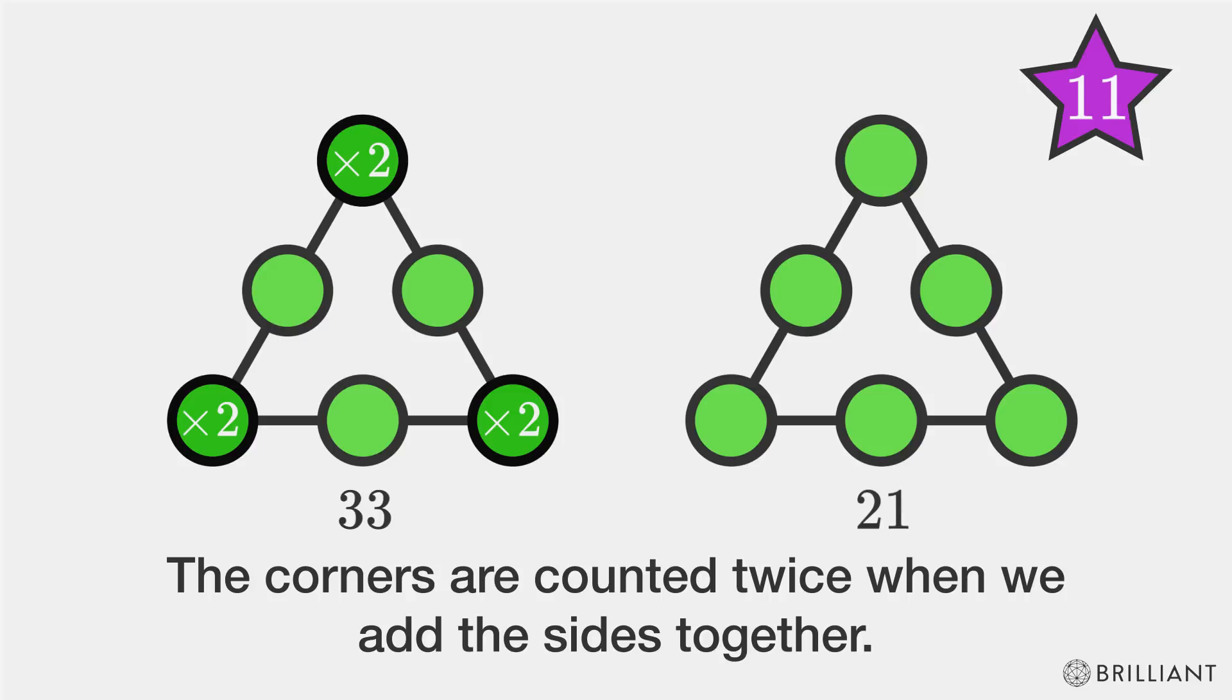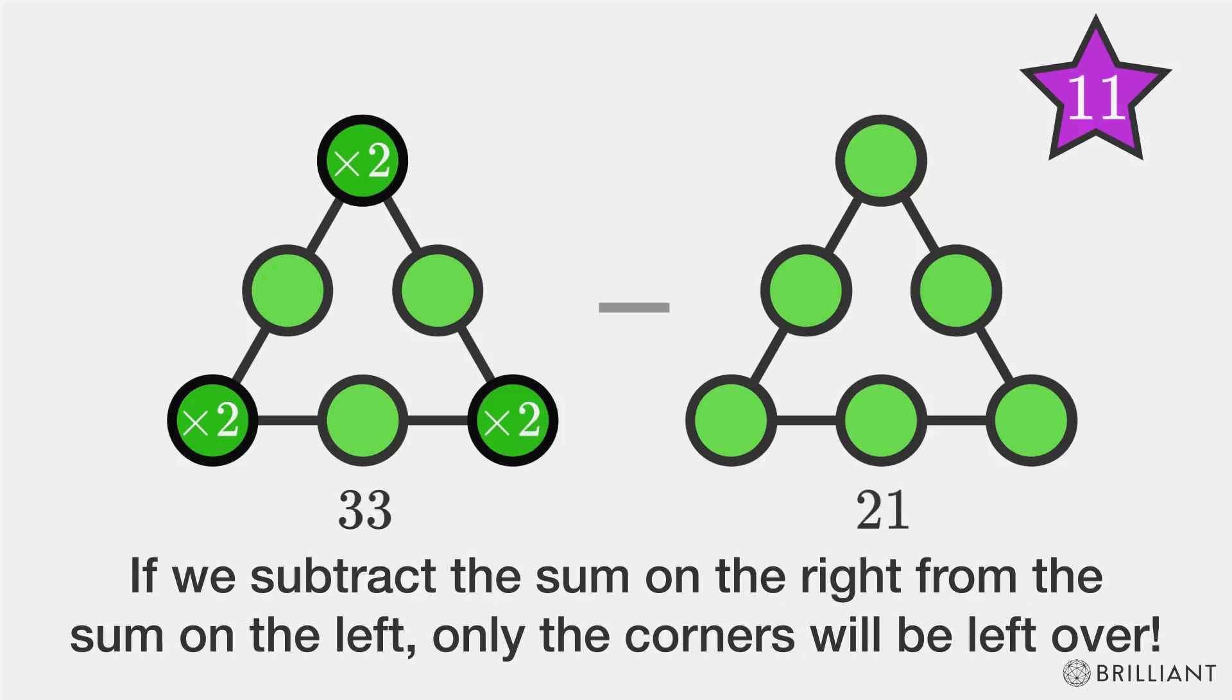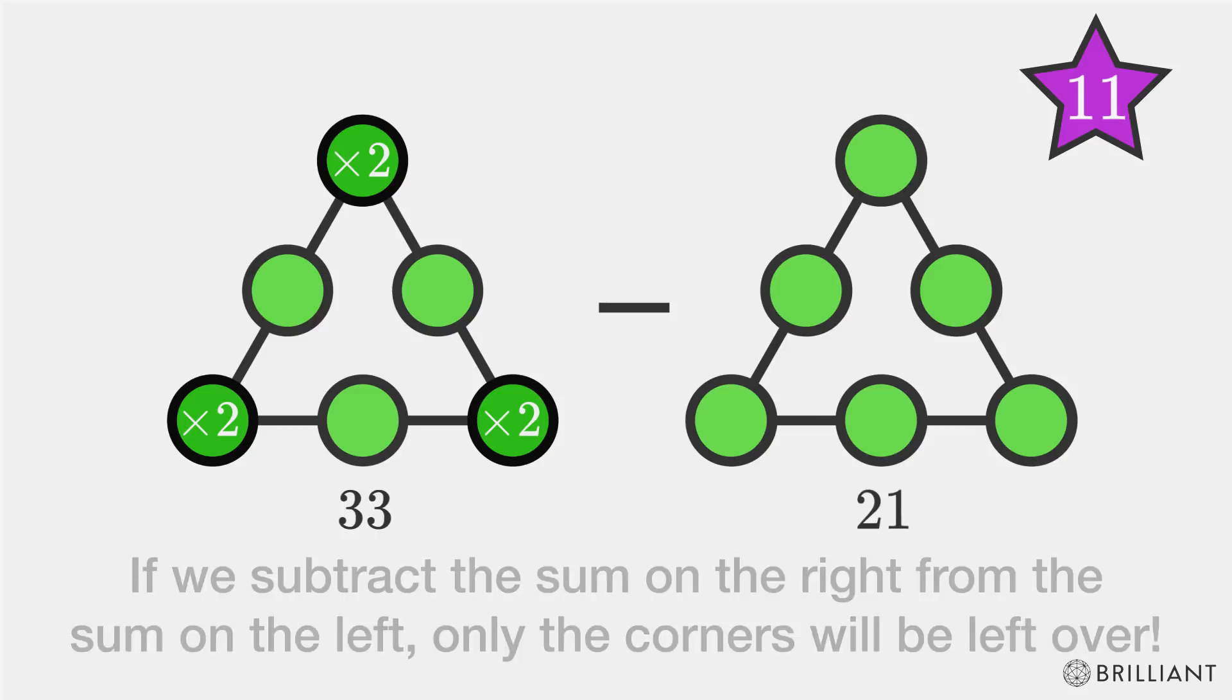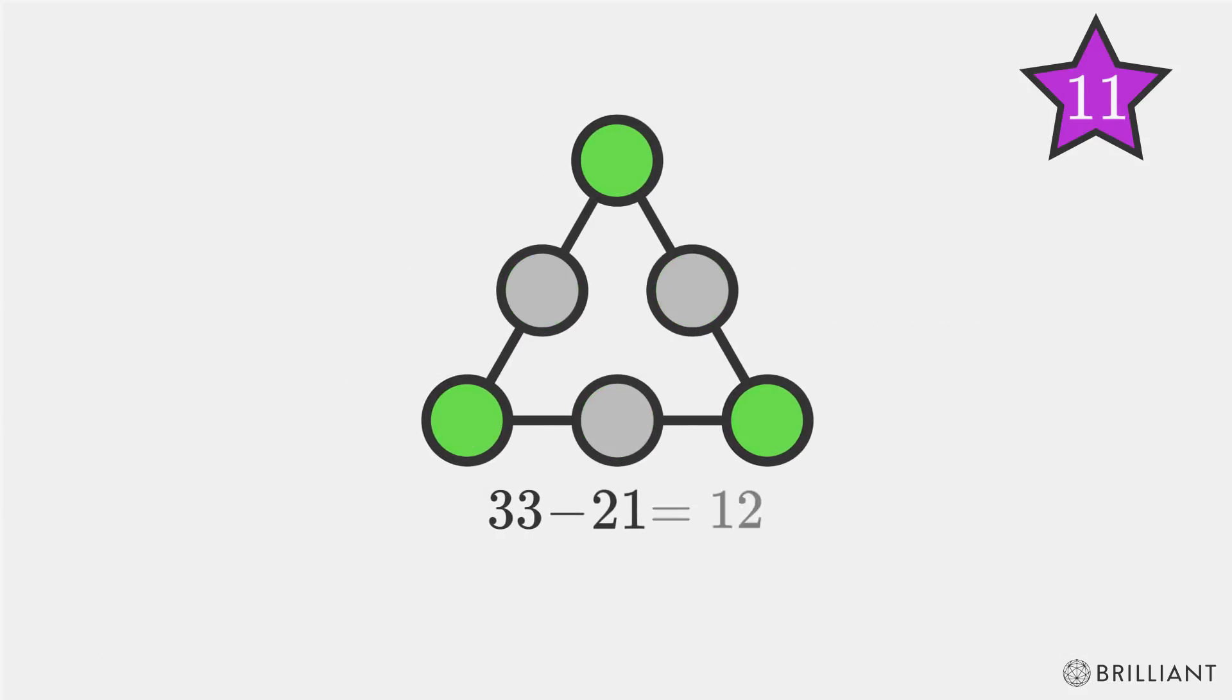The corners are counted twice when we add the sides together. If we subtract the sum on the right from the sum on the left, only the corners will be left over. 33 minus 21 is 12, so the corners sum to 12.